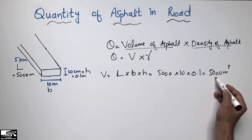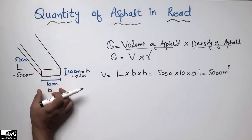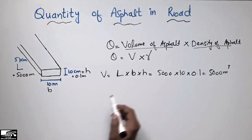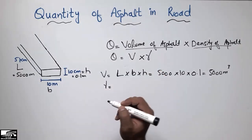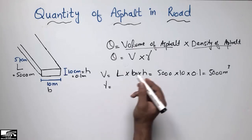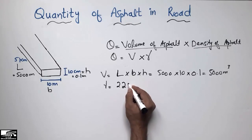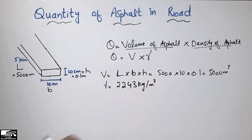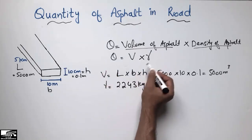So our volume is 5000 cubic meters for this asphalt layer, with a width of 10 meters, height of 10 centimeters, and length of 5 kilometers. The density of asphalt is known from standard codes and guidelines: 2243 kilograms per cubic meter.